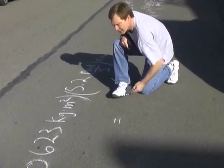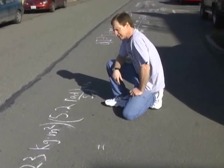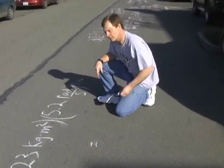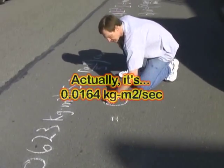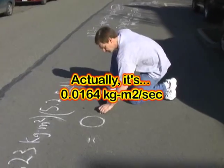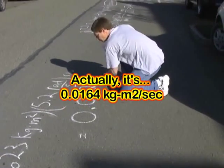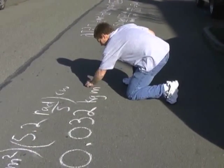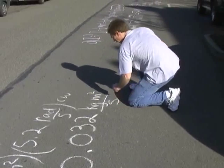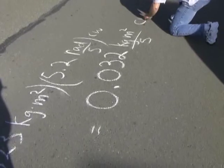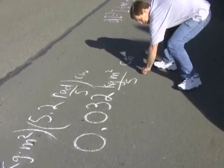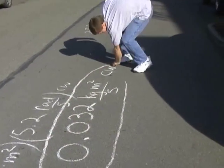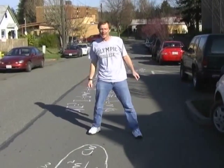And that's going to equal — let's see — about 0.032 kilogram meters squared per second. I'm roughing it again. 0.032 kilogram meters squared per second, and that's clockwise. I'll circle that — and that's angular momentum.